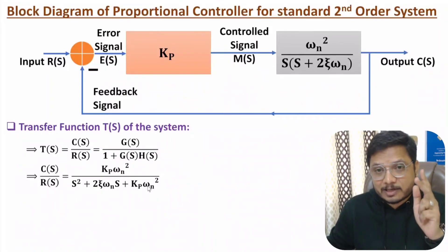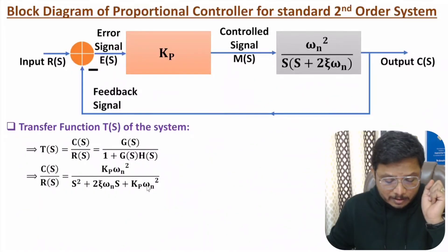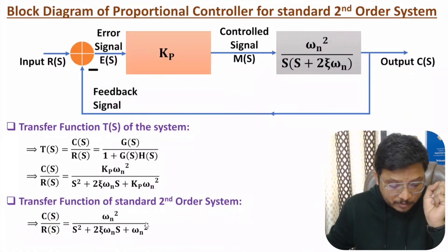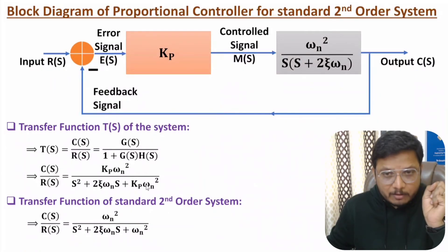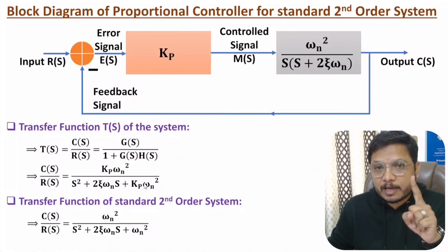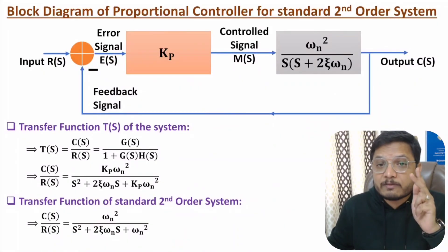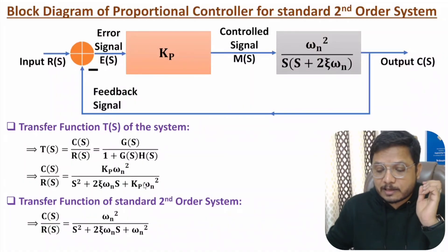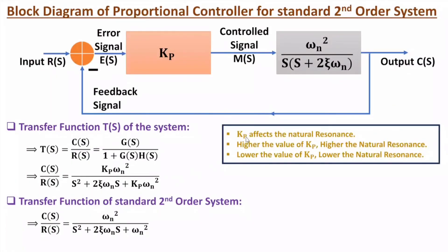Comparing this transfer function with the standard second-order system, there is only one difference: the standard second-order system has ωn² in the denominator, while the proportional controller system has Kp·ωn². This means that if you increase the value of Kp, the natural resonance frequency increases; and if you decrease Kp, the natural resonance frequency decreases. So Kp directly affects the natural resonance: higher Kp gives higher natural resonance, and lower Kp gives lower natural resonance.